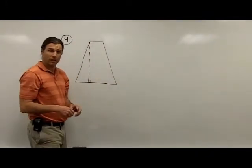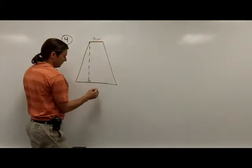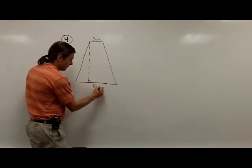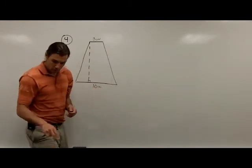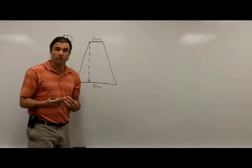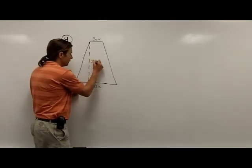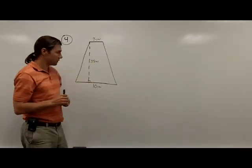So parallel sides are 3 inches and 10 inches. The smaller side up here I'll label 3 inches. The larger side I'll label 10 inches. It also tells me that it has an altitude of 35 inches. Altitude is the same thing as height, so the height of this trapezoid is going to be 35 inches.